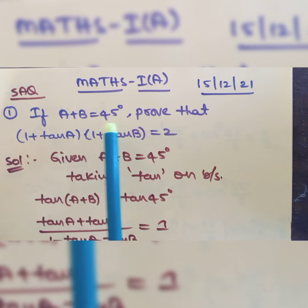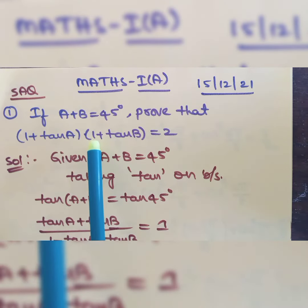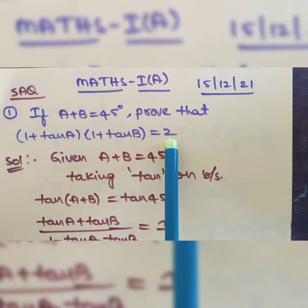First one is, if A plus B is equal to 45 degrees, prove that (1 + tan A) into (1 + tan B) is equal to 2.